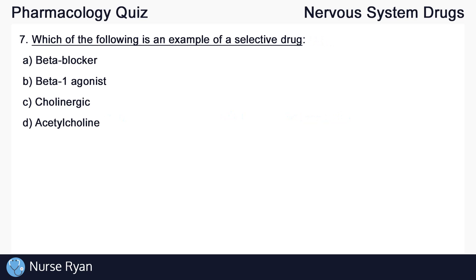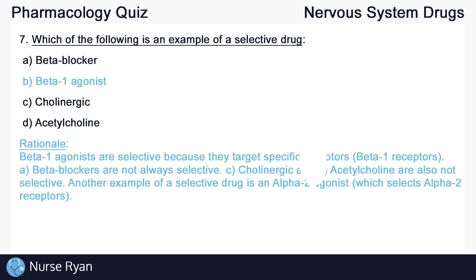Question number seven: which of the following is an example of a selective drug? The answer here is B, a beta-1 agonist. Beta-1 agonists are selective because they target specific receptors — beta-1 receptors.